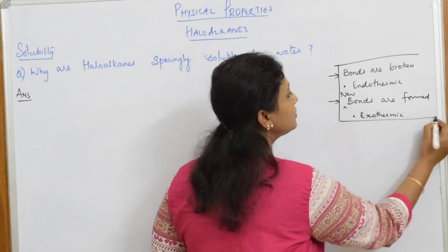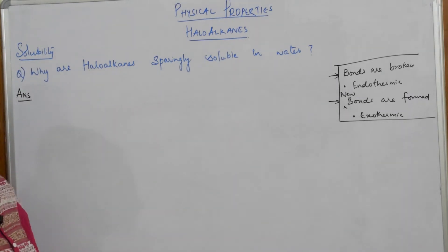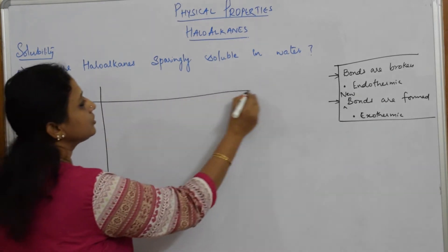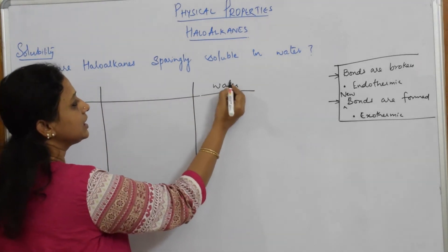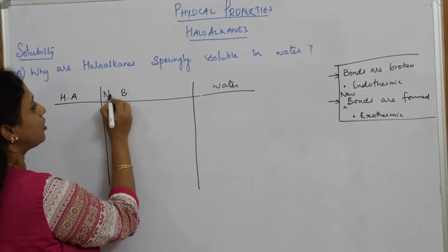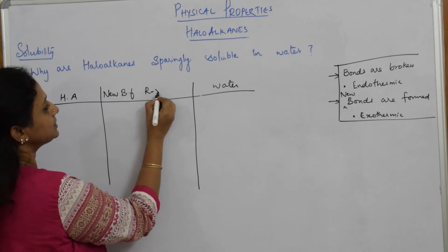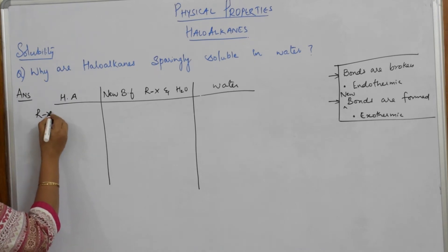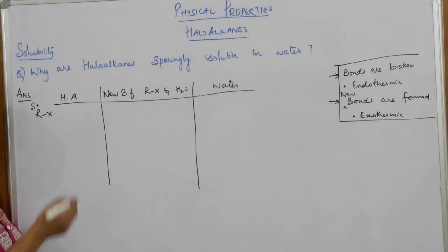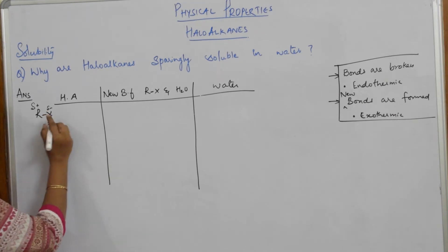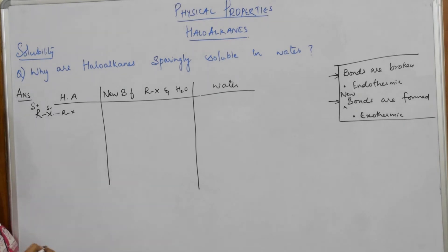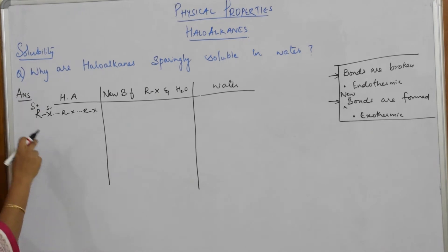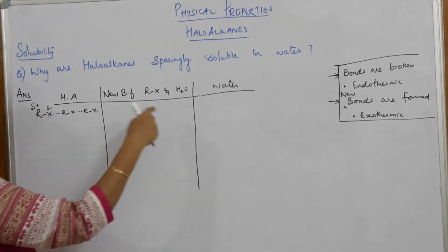Now let's set up the board. On one side write haloalkanes (RX), and in the middle write water. We are looking at bond formation between RX and water. In haloalkane, R is highly electropositive and X is electronegative. X forms bonds with adjacent RX molecules, so to dissolve RX in water, I first have to break those bonds.